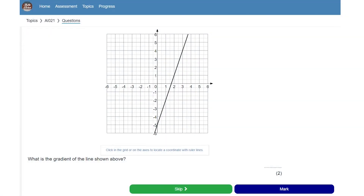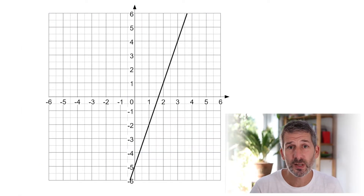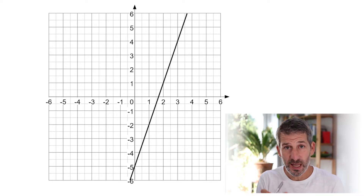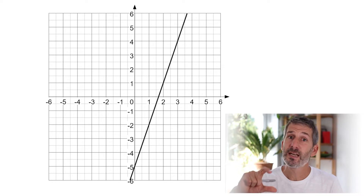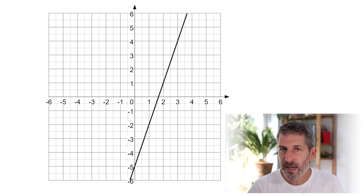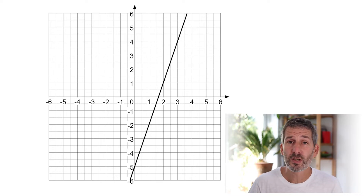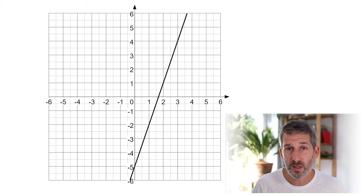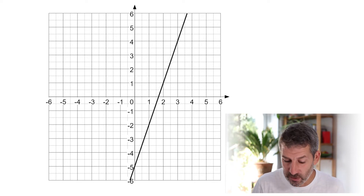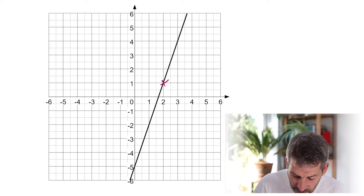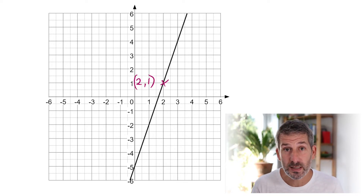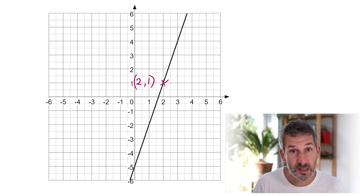This question is asking us to find the gradient of the line. The way we find the gradient of any straight line is we take two points on that line, find the difference in the x-coordinates between those two points and the difference in the y-coordinates. You can choose any two points on the line, but it makes sense to choose ones where you can easily read off the coordinates and the numbers are nice and easy to deal with. In this example, this point here has coordinates 2, 1 — easy to read off, small positive numbers.